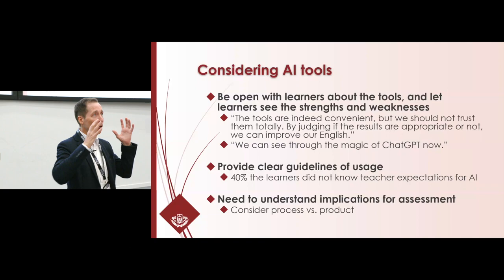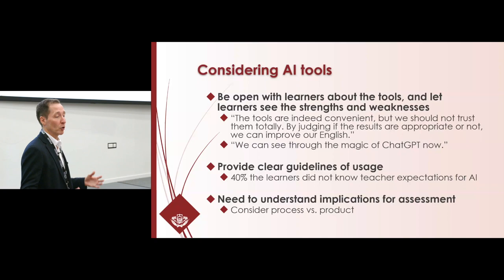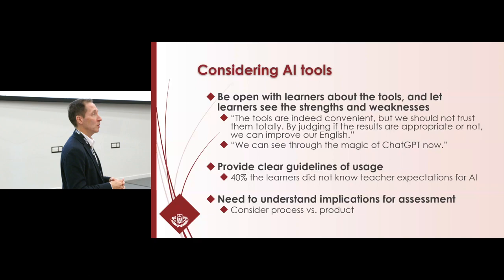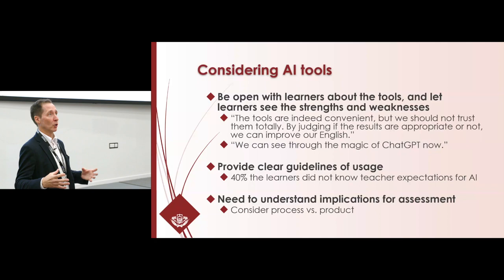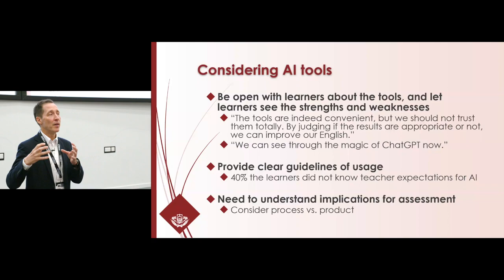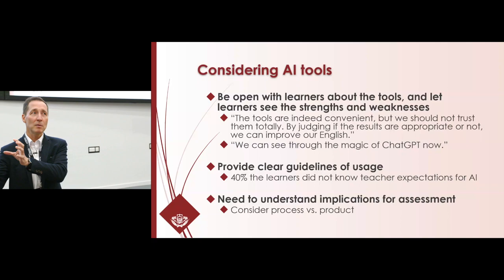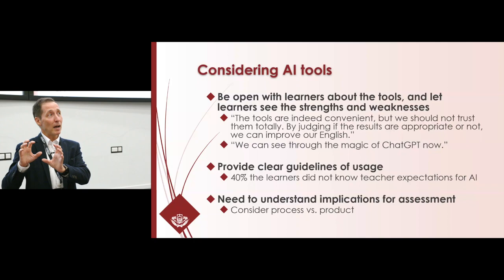If we focus too much on the cheating and not on what we can do with it, sometimes we're throwing away the baby with the bathwater. We do need to provide clear guidelines of usage — with 40% not knowing how to use these tools, and really importantly, we need to understand the implications for assessment. Students are going to produce better work at the end — the final product will be better. They have ChatGPT, they have machine translation, they have ways of checking the final product. Therefore, we need to change our focus more on the process. How are they using it? Can we use the process as part of our assessment rather than just simply the final product?